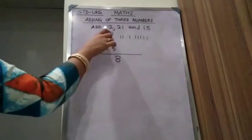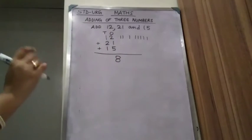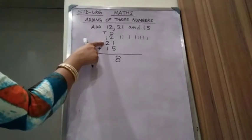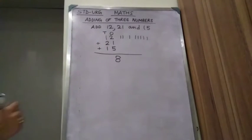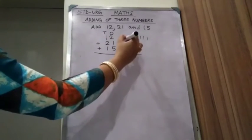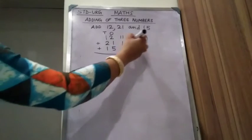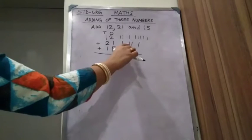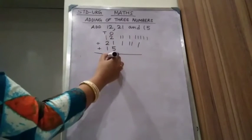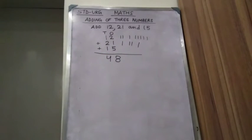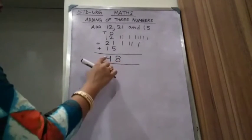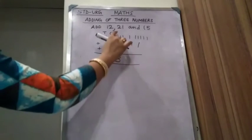Write 8 here in the ones column. Now we have to add the tens column. The numbers in the tens column are 1, 2, and 2. Count: 1, 2, 3, 4. This is the answer: 48. It means 4 tens, 8 ones.